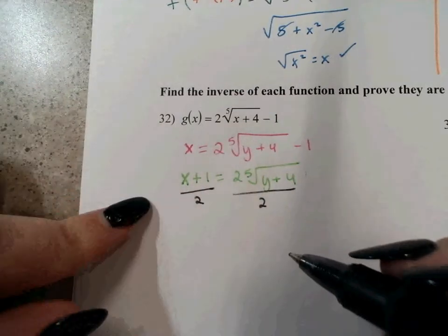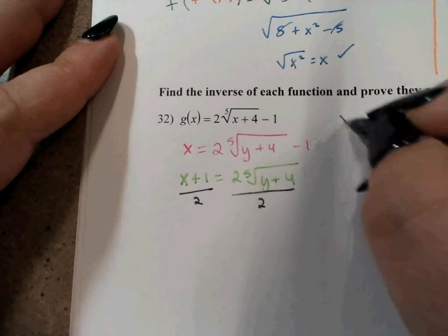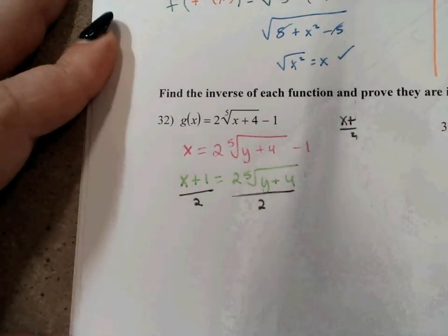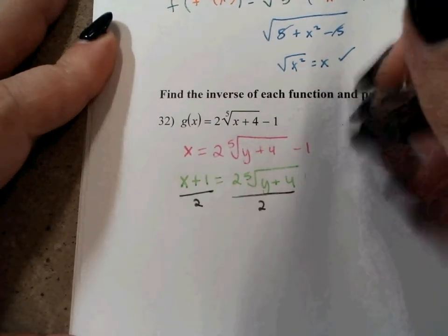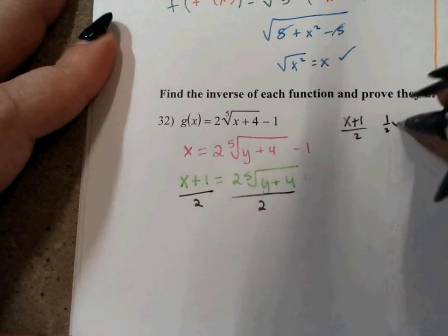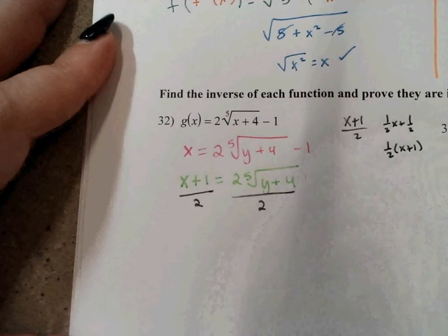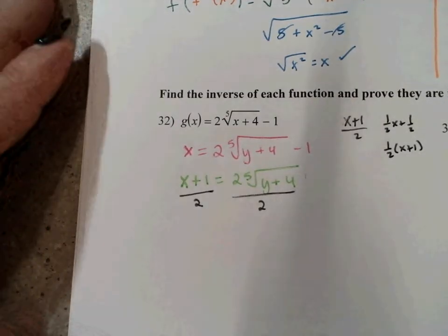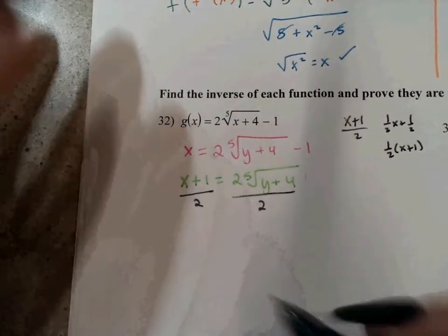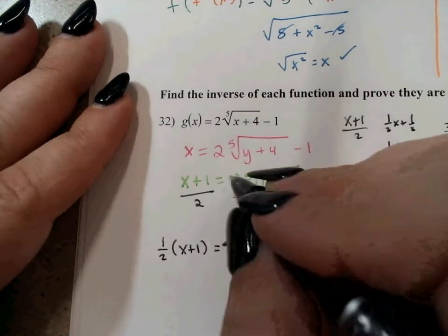You could leave it as x plus 1 over 2. You could write x plus 1 over 2, or 1 half x plus 1 half, or 1 half times x plus 1. It doesn't really matter — I'm not going to count you wrong for any one of those. To stay consistent, I'm going to go ahead and write the 1 half out front and leave it like that.